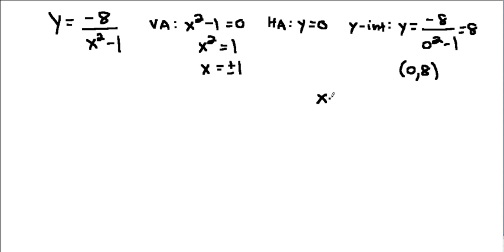x-intercept, that's found by letting y equal 0. So therefore 0 equals negative 8 over x squared minus 1. And then if you multiply both sides by the denominator, x squared minus 1, it'll cancel on the right. And then on the left, it'll just multiply by 0, leaving you with 0 again. And so we have to find out when does 0 equal negative 8, which never happens, so there isn't an x-intercept.